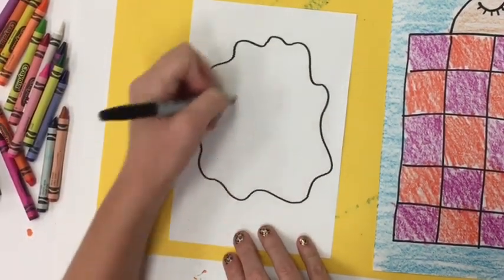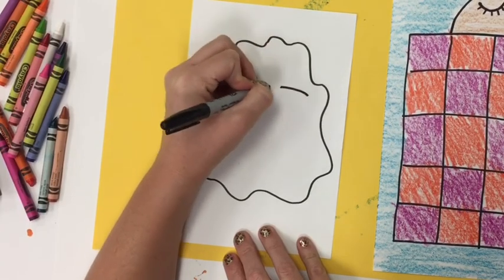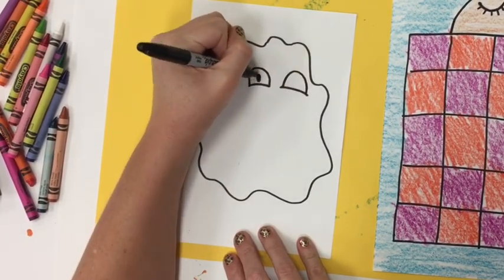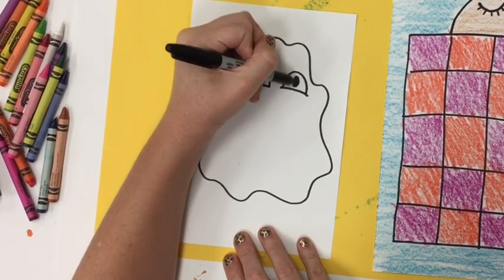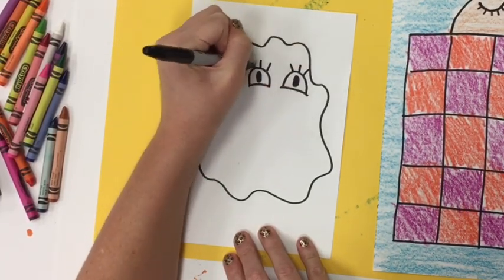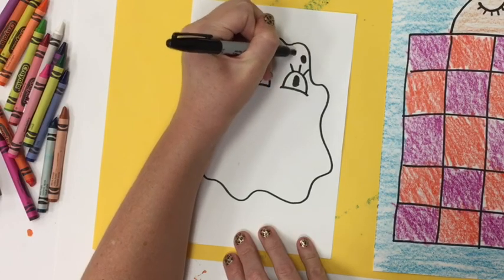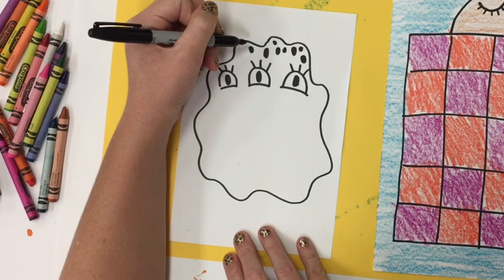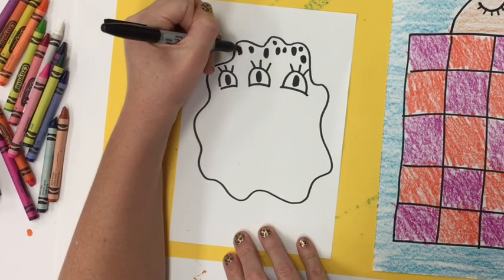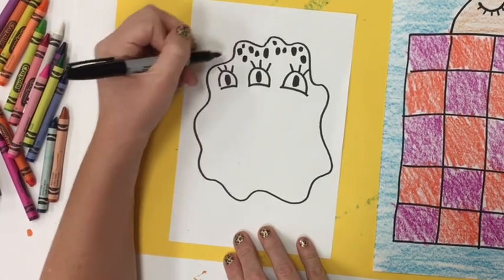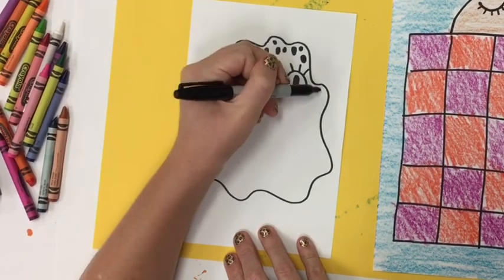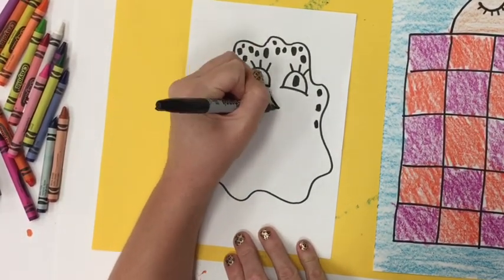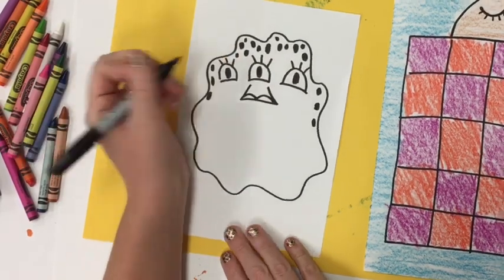Now if you make arms and hair sticking out the outside of your monster, it's going to be really hard to cut those out with scissors. So I highly recommend all the details that you add are drawn inside of your monster. We have to cut this out with scissors, so keep all those details inside. Anything sticking off the monster's body is going to be really hard to cut out.